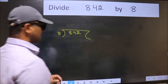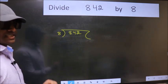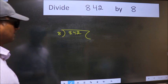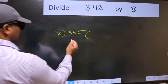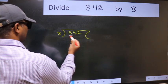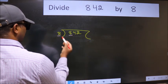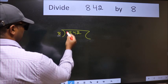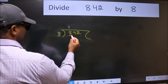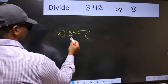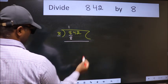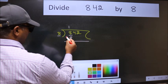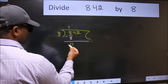This is your step 1. Here we have 8 and here 8. When do we get 8 in the 8 table? 8 once is 8. Now we should subtract. We get 0.